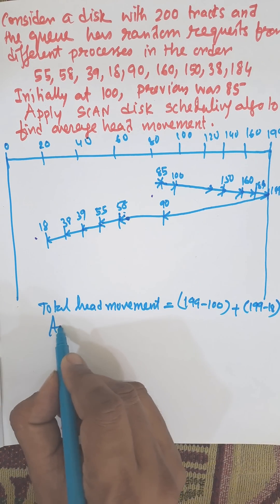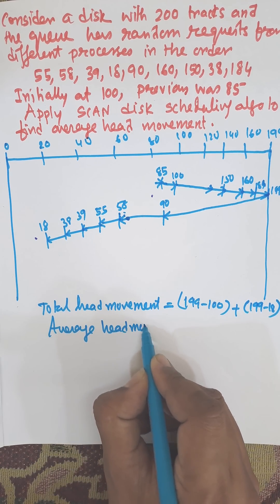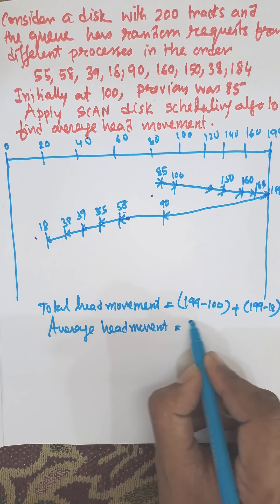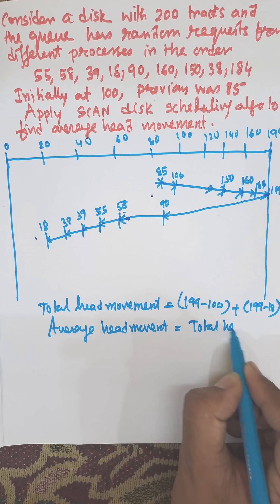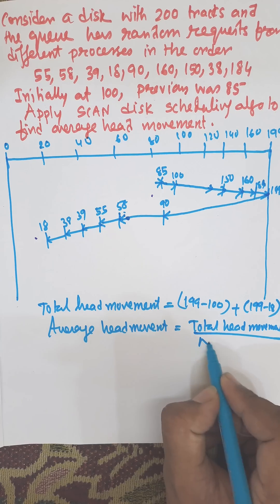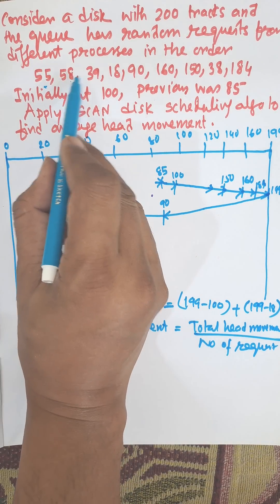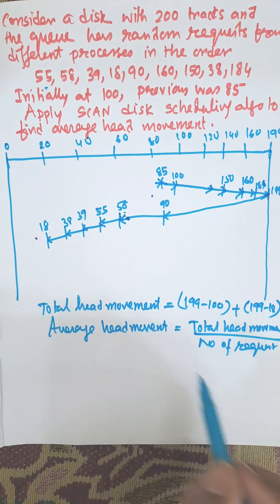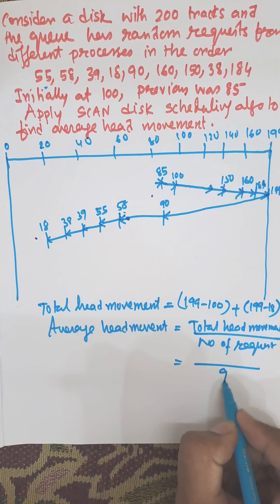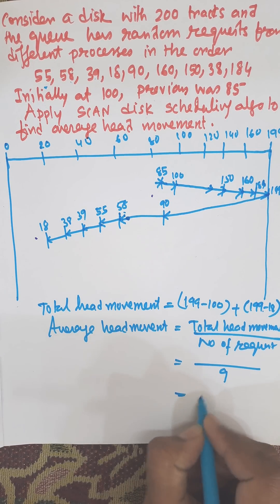Average head movement equals total head movement divided by number of requests. Here the number of requests is 9, so divide by 9. Calculate this and we will get the answer.